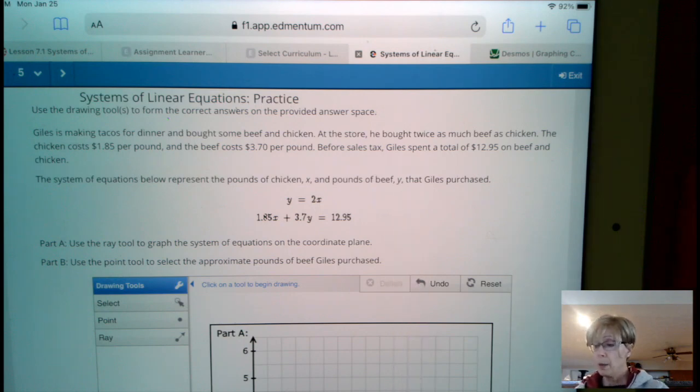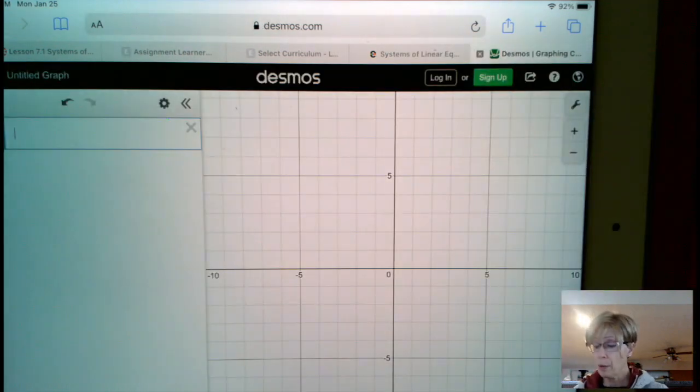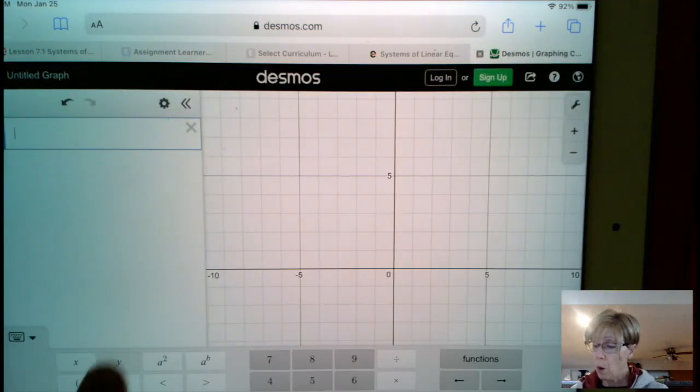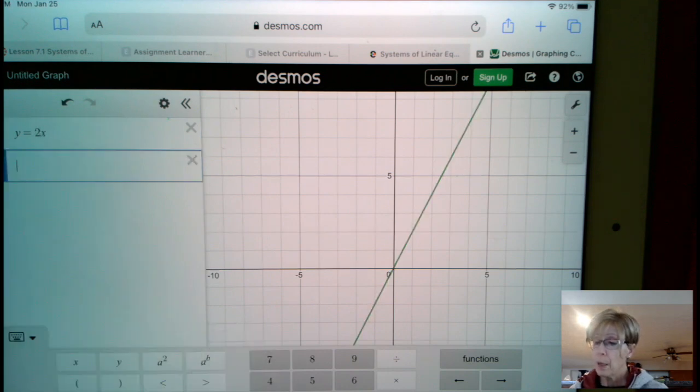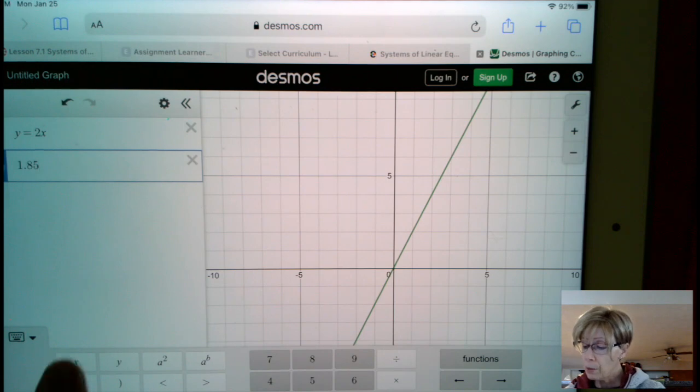But if we flip over here to Desmos, and we type this in, we get Y equals 2X. And then our 1.85X plus 3.7Y equals $12.95.